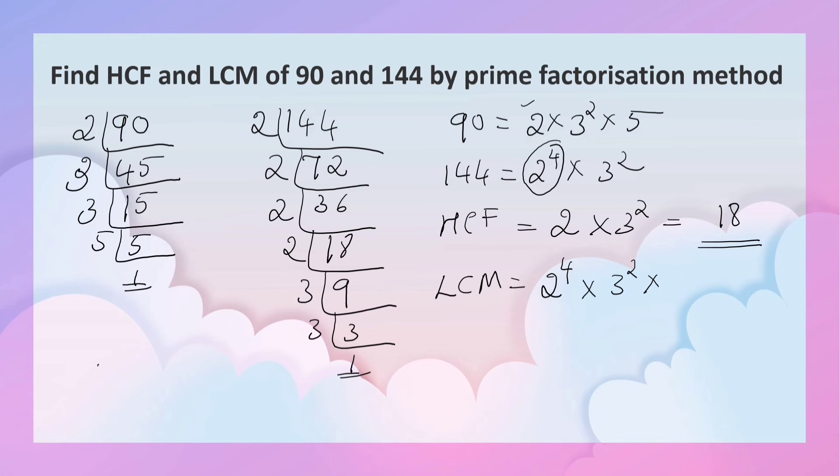Here times 5. What is it? 2⁴ is 16, 3² is 9, times 5. 16 × 9 equals 144. 144 × 5, what is it? 5 × 4 is 20, 144 × 5 equals 720. So LCM is 720.